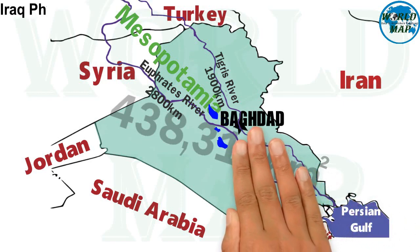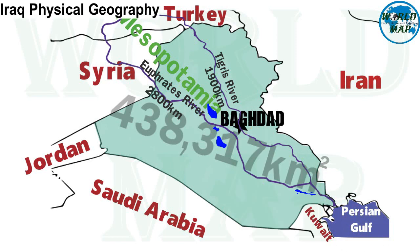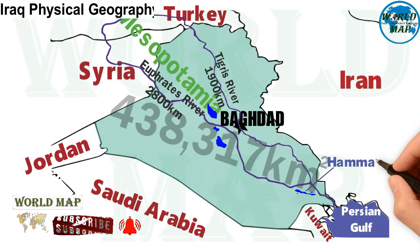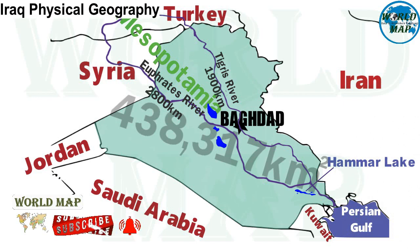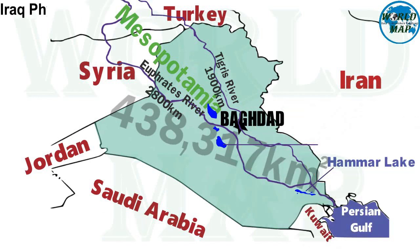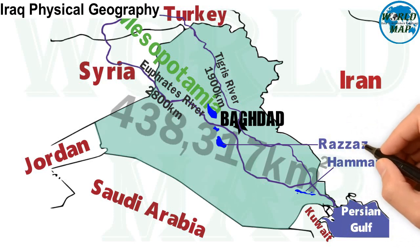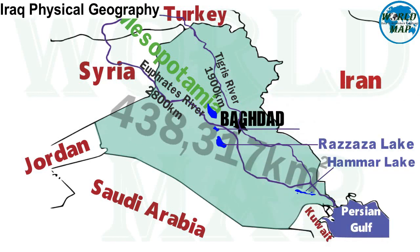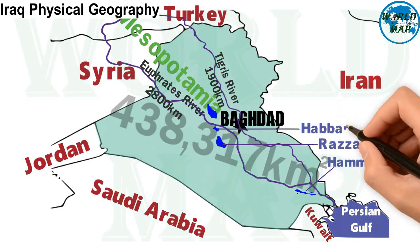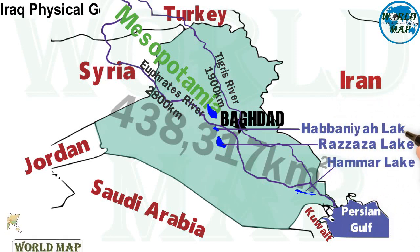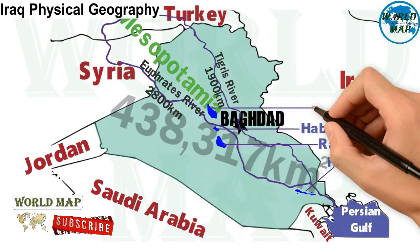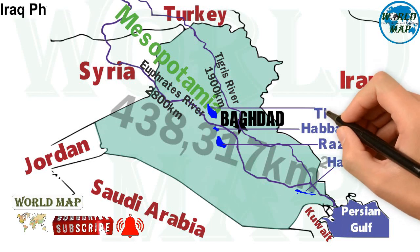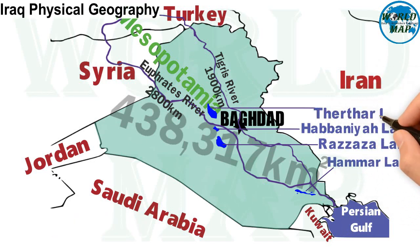Famous lakes of Iraq: Lake Hamar is a saline lake in the southeastern part of Iraq within the Hamar marshes. Lake Razzaza, also known as Lake Milh, is literally a sea of salt, located a few miles west of Karbala. Lake Habaniyah is a lake located near the banks of the Euphrates. Lake Tharthar is an artificial lake opened in 1956, situated 100 kilometers northwest of Baghdad between the Tigris and Euphrates rivers.